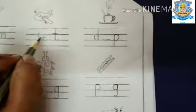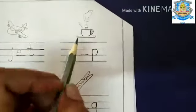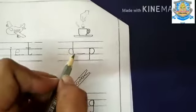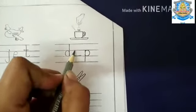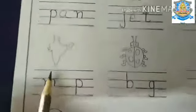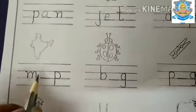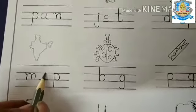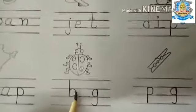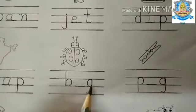We have to fill it in. Next is map: M, A, P — map. So what do we write here? A. Now next is bug: B, U, G — bug.